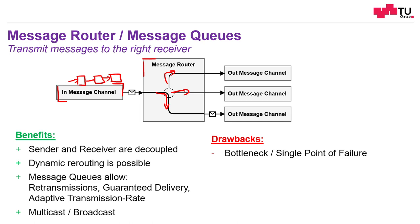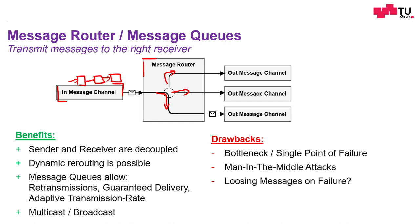The drawbacks are that the message router is a bottleneck and a single point of failure. That's why modern message queue systems and messaging brokers have redundancy built in. Man-in-the-middle attacks are possible since the message router stores messages that could be read if these components are hacked. There's also the risk of losing messages on failure — if the router fails, messages not yet sent may be lost unless stored in permanent memory.